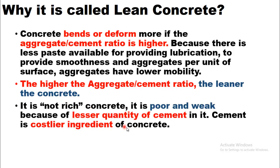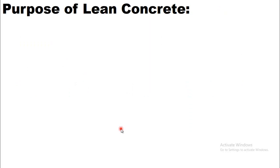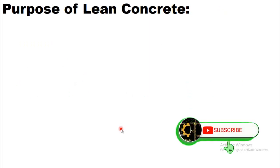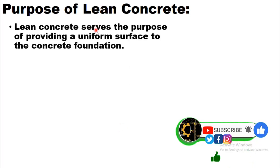Lean concrete is not rich concrete — it is poor and weak because of the lesser quantity of cement in it. Cement is the costlier ingredient of concrete. It is called lean or weak concrete because the binding agent (cement) is present in a lesser quantity, making it the leaner mix.